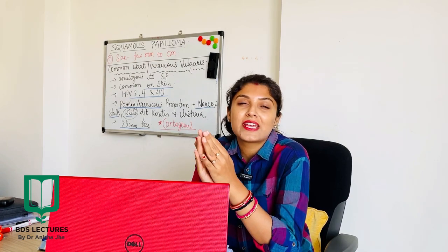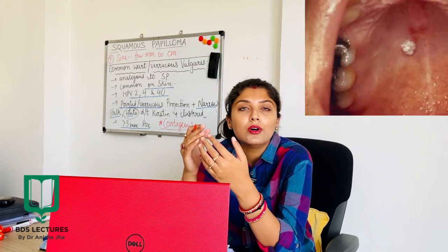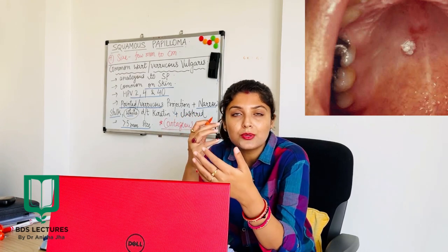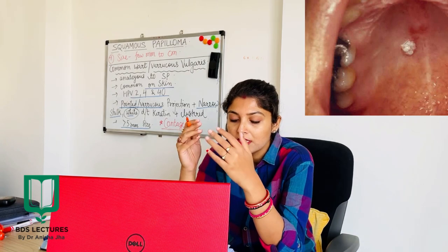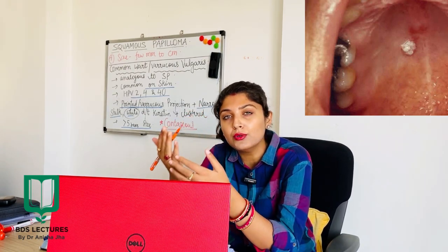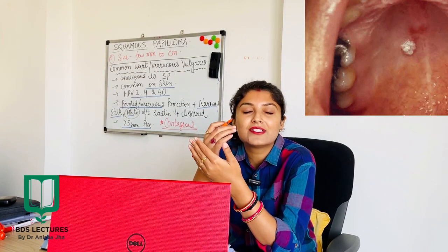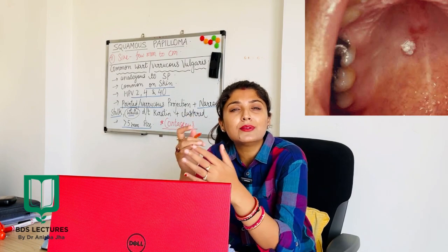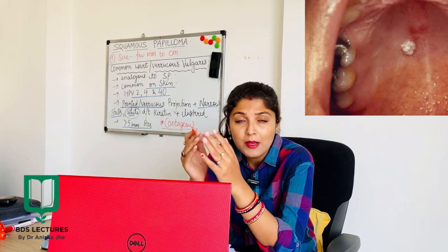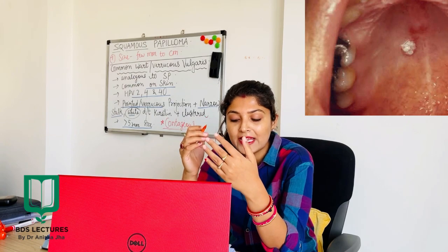The size ranges from a few millimeters to centimeters. We have another lesion — verruca vulgaris, or common wart — which is very similar to squamous papilloma in appearance. It is the most common warty tumor of the skin and is analogous to oral squamous papilloma. It is very uncommon on oral mucosa but commonly found on the skin. The associated HPV strains for verruca vulgaris are strains 2, 4, and 40 — in contrast to HPV 6 and 11 for squamous papilloma.